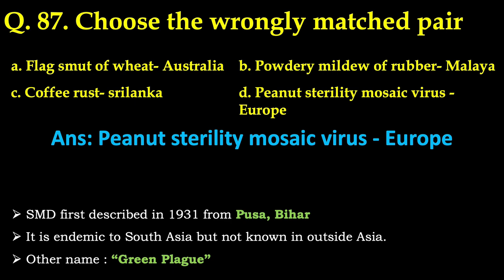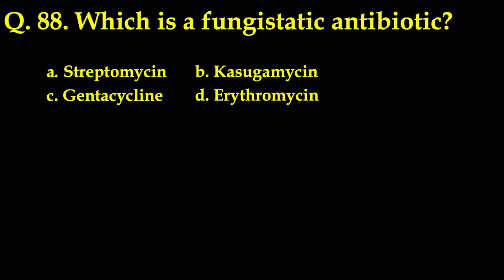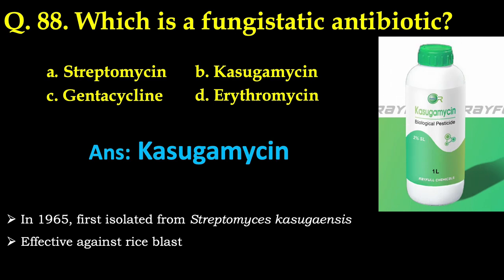The next question: which is a fungistatic antibiotic? Out of streptomycin, kasugamycin, gentamycin, and erythromycin, the correct answer is kasugamycin. In 1965, kasugamycin was first isolated from Streptomyces kasugaensis, and it is effective in the management of blast of rice caused by Pyricularia oryzae and its perfect stage Magnaporthe oryzae.